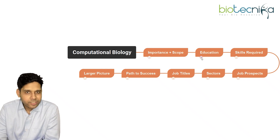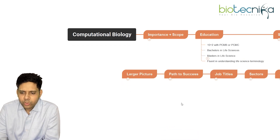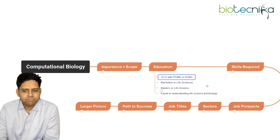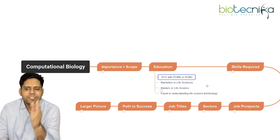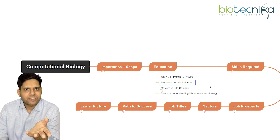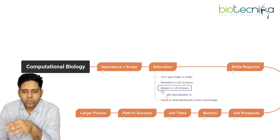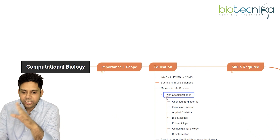What are the educational requirements to get into this field? It's very basic. You should have a 10+2 with Physics, Chemistry, Maths, Biology or Physics, Chemistry, Maths, and Computers. You should have a Bachelor's in Life Sciences, and while doing your Master's in Life Sciences, you can take up a specialization.